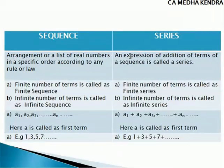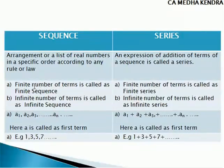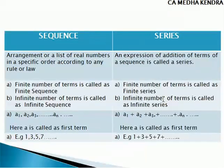Series is the expression of addition of terms of a sequence. Expressing the sequence in terms of addition is called series. If the sequence has a finite number of terms, it is called a finite sequence. If it has an infinite number of terms, it is called an infinite sequence. Similarly, in series, a finite number of terms is called a finite series, and infinite terms make an infinite series.